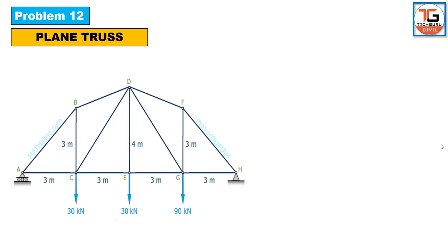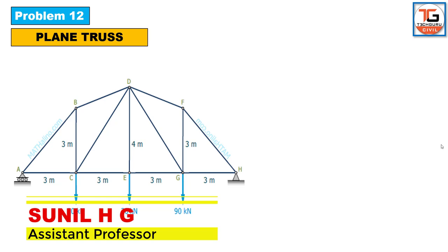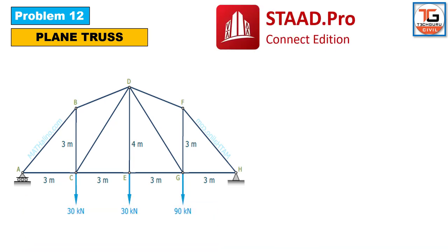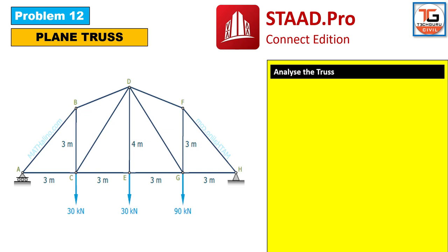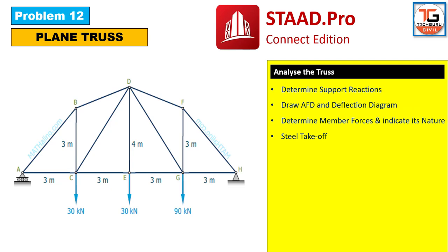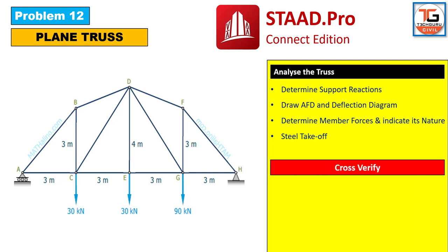Welcome to techkuru.civil. In this session we are going to discuss plane truss problem number 12. We are going to solve this truss using STAAD Pro Connect Edition. Our task is to analyze the given truss to determine the support reactions, draw the axial force diagram and deflection diagram, determine the member forces and indicate their nature — tension or compression. Finally we will take up the steel quantity and cross verify the hand calculation results with the STAAD analysis results. Note that the units in this problem are kilonewton and meter.